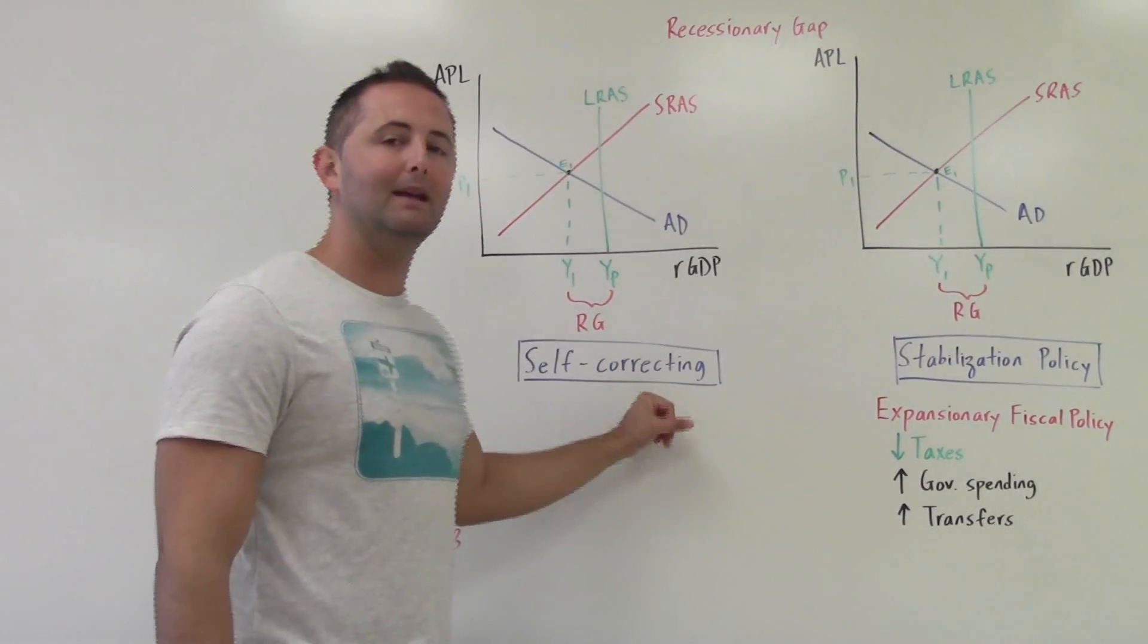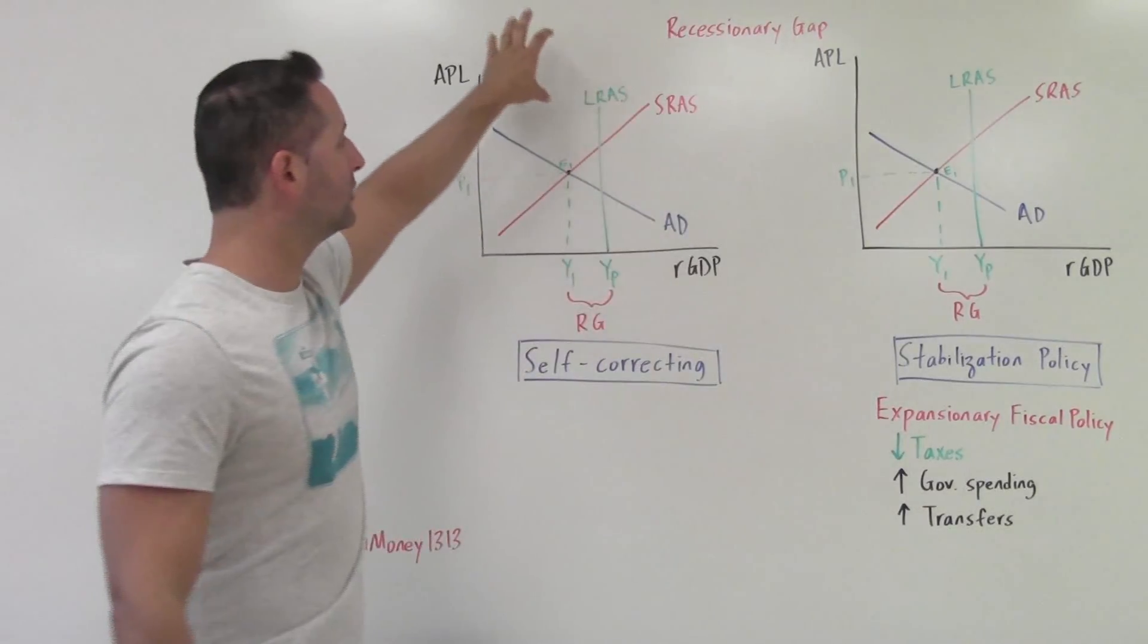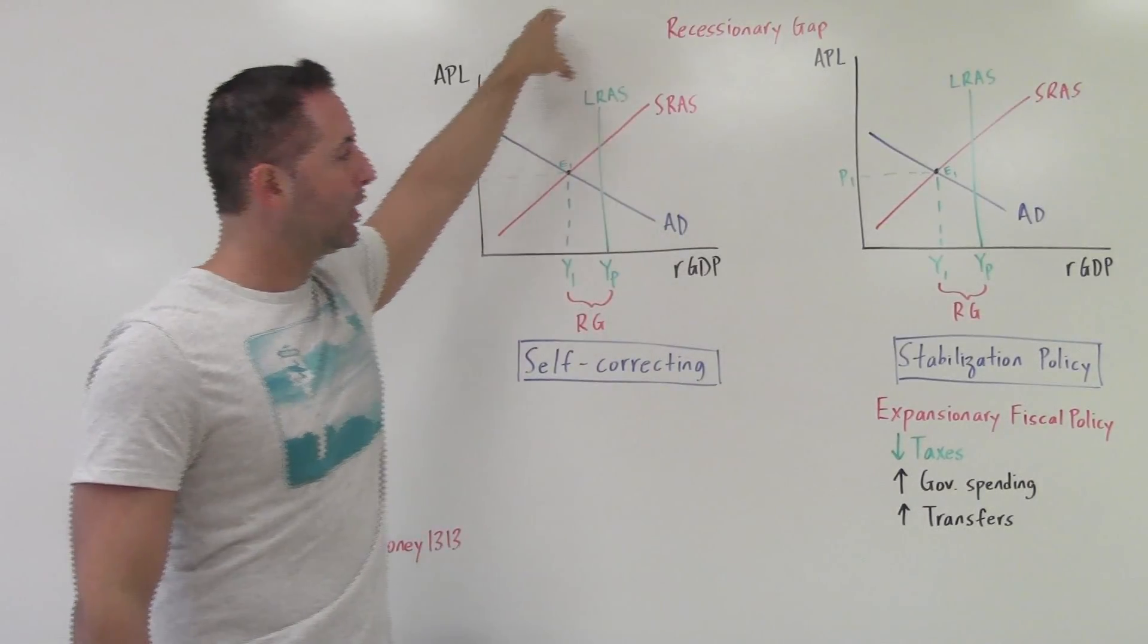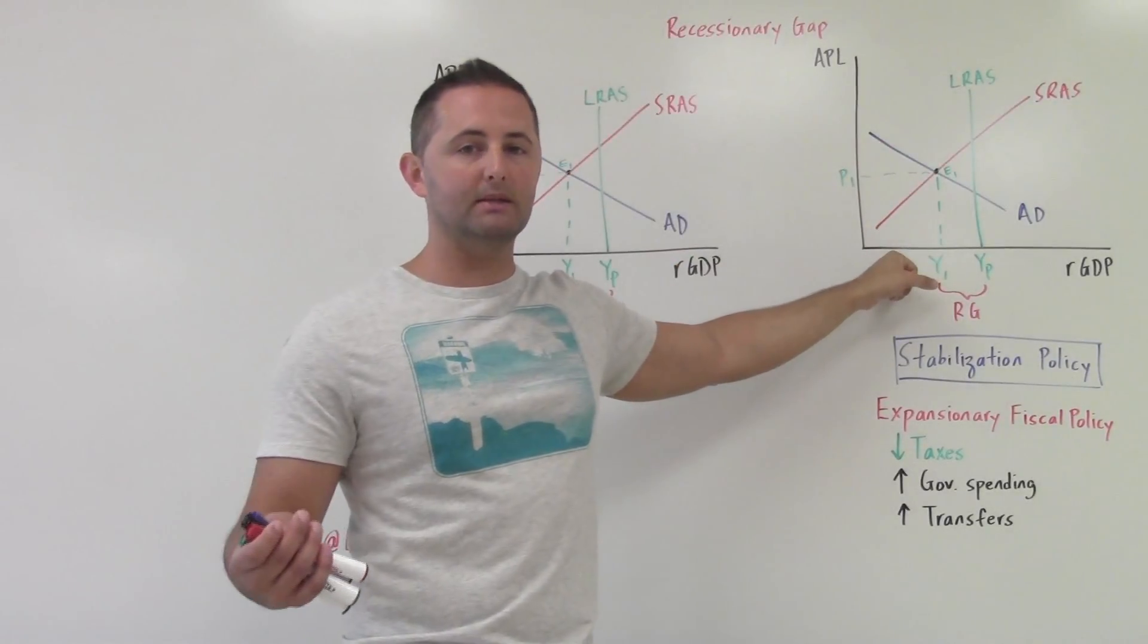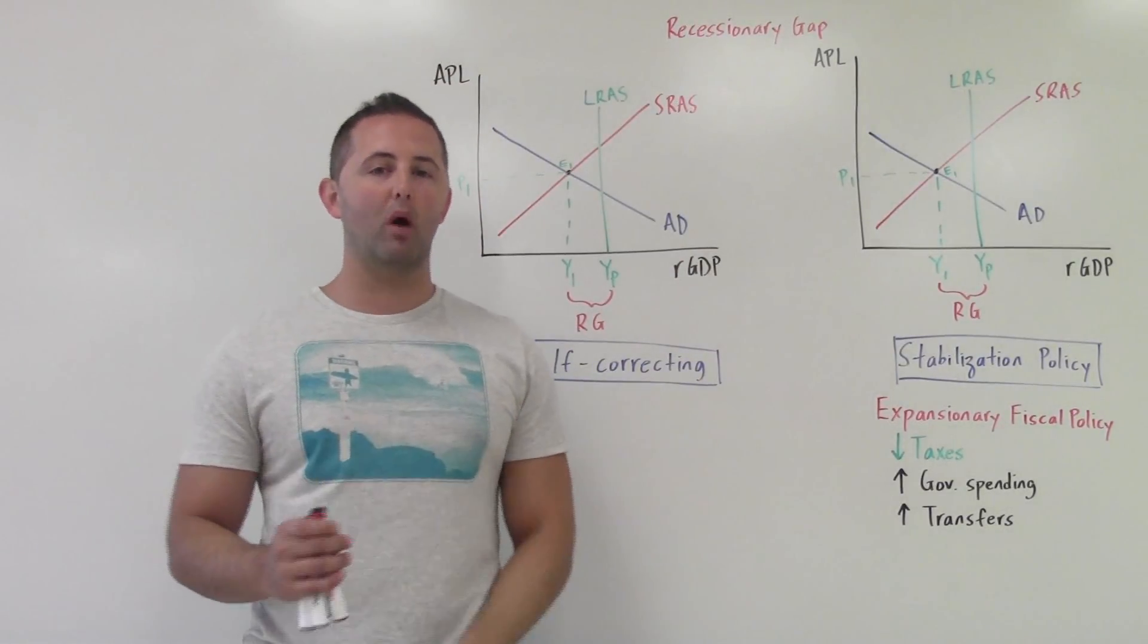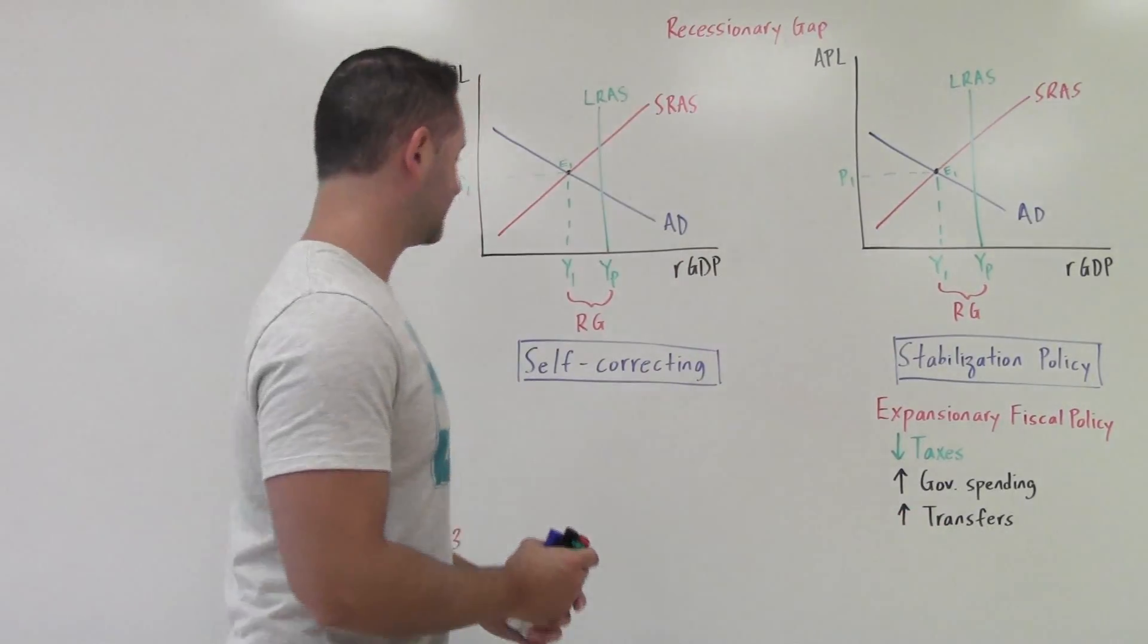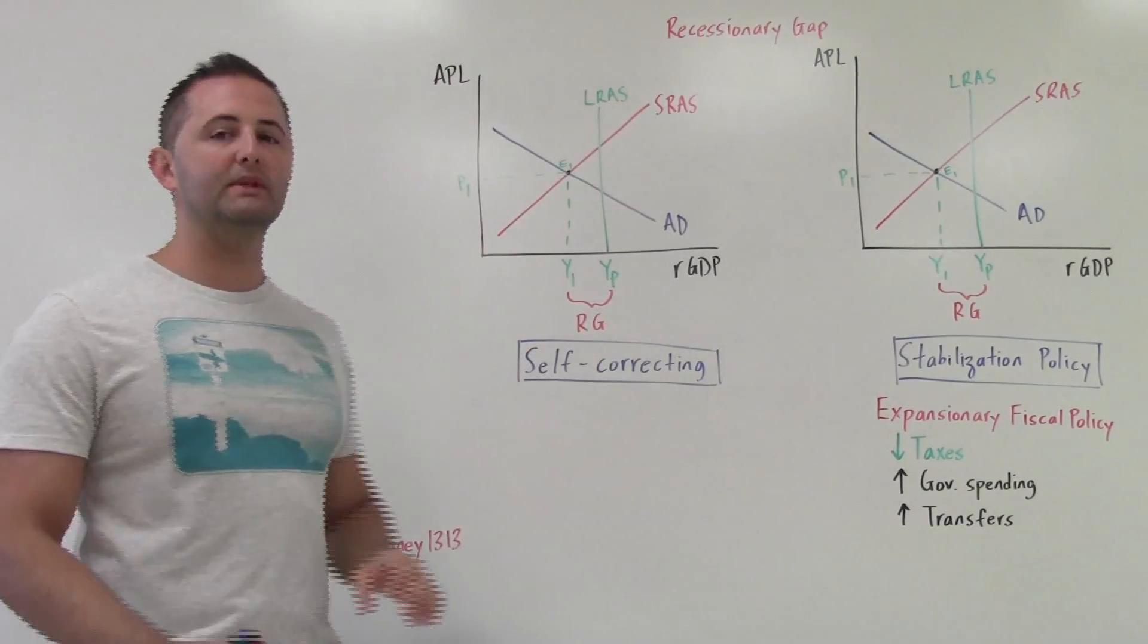The first way is that it can self-correct. If the government does nothing, what we're going to do on this model will be what will occur. Or the government can get involved and actively try to stabilize the economy. We're going to split this into two videos so that neither one is overwhelming and you can compare both. This video, we're going to focus on how the economy will self-correct.